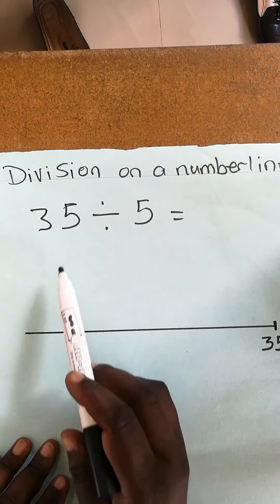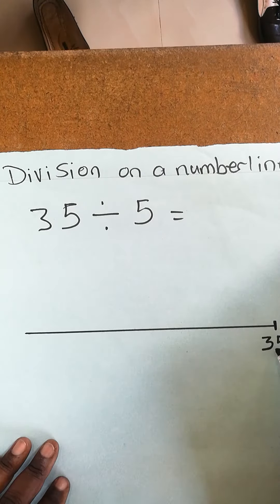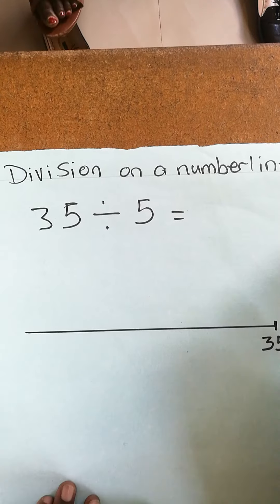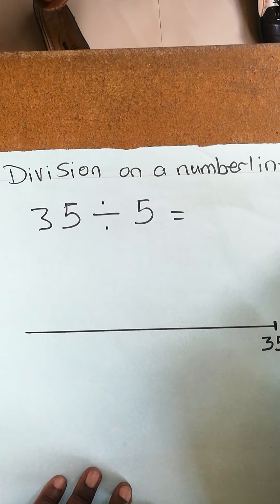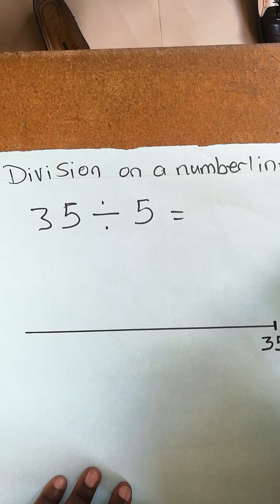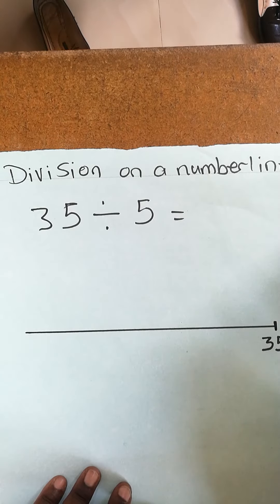You are going to put the biggest number at the end of the line. You put a mark there and that's your 35, where you're starting from. Next step: what number is the dividend? The dividend is 5, so you're...